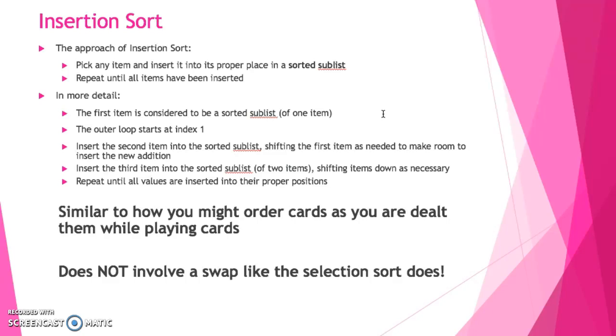So in more detail, the first element in our array, we assume the first element is already sorted. It's a sublist of one element, therefore that one element is sorted within itself. My outer loop actually begins the process at index 1, as opposed to my selection sort which begins at index 0. I now begin looking at index 1, which is really my second element, and I determine where this element needs to go with respect to my sorted sublist. If needed, I will shift my first item down to make room for this new value. And I will keep on doing this process, where I will shift the values down to make room for the value so that it's in its proper place.